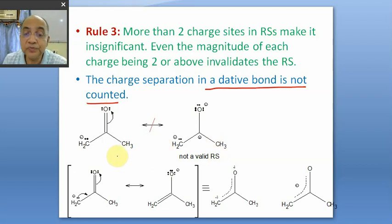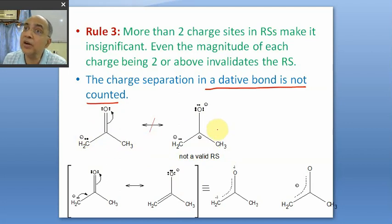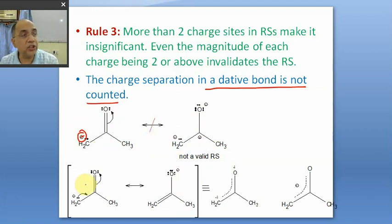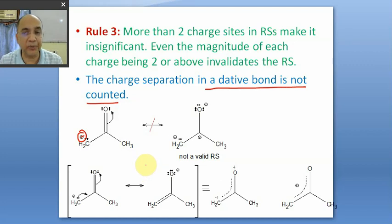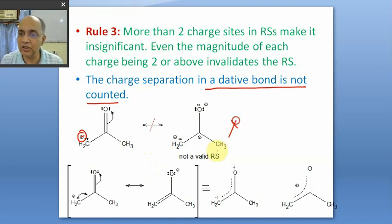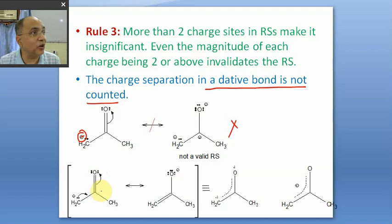Consider the acetone carbanion — it is already charged. If you try to polarize the carbonyl pi bond first using pattern two, you get plus, minus, minus: three charge centers. More than two charge centers is totally unacceptable. Therefore, you cannot apply pattern two followed by pattern three for such species. You must use the two-arrow-mark pattern four directly — come in two steps simultaneously — giving only two RSS with at most two charge centers.